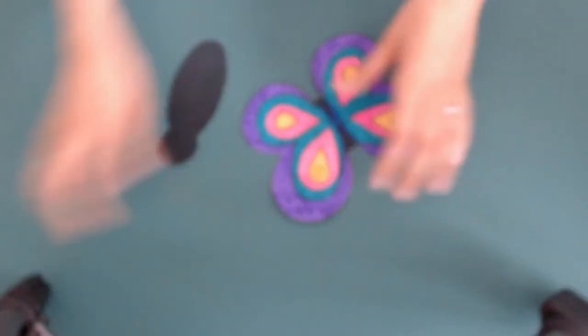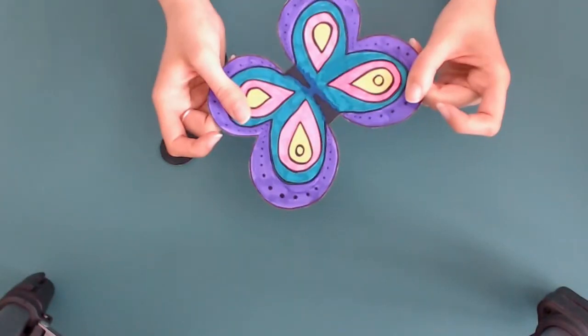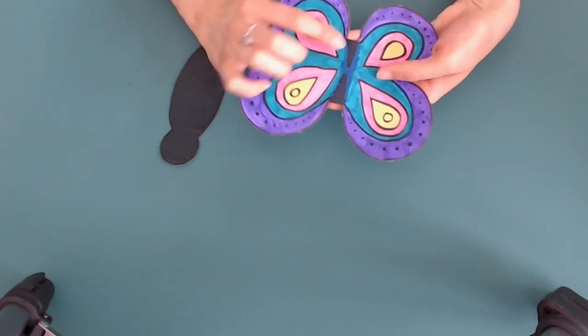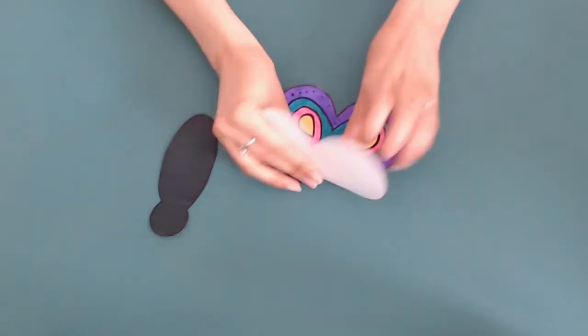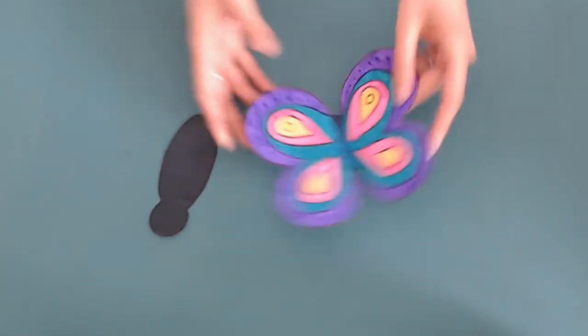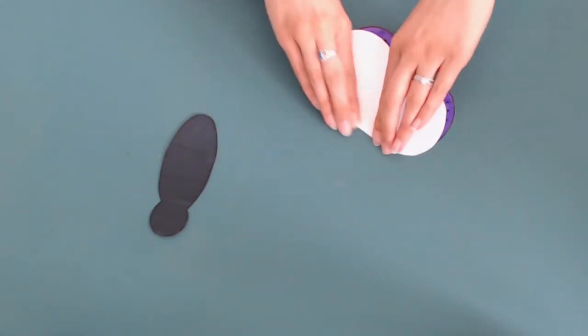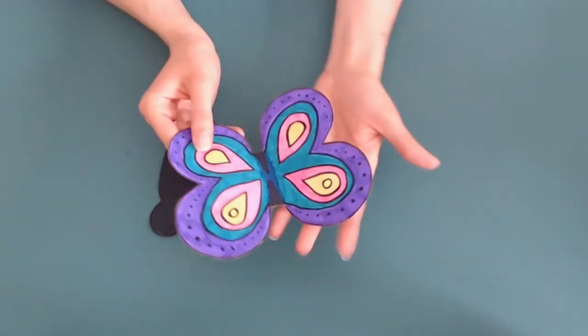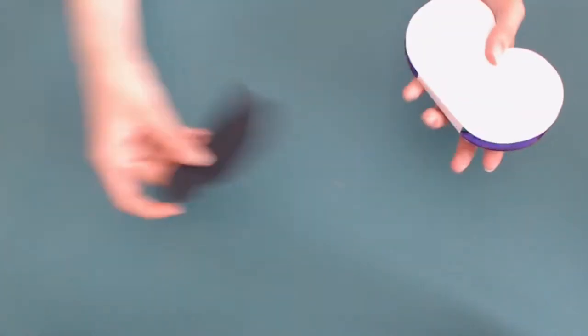So what you need to start with is actually folding the butterfly along each side. Once that's done it gives us a really good strip for gluing the wings onto the body.